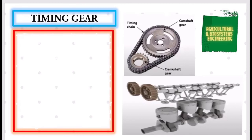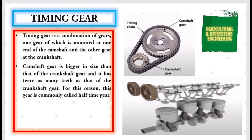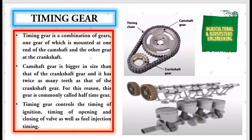Next, timing gear. Timing gear is a combination of gears, one gear of which is mounted at one end of the camshaft and the other gear at the crankshaft. Camshaft gear is bigger in size than that of the crankshaft gear and it has twice as many teeth as that of the crankshaft gear. For this reason, this gear is commonly called half-time gear. Timing gear controls the timing of ignition, timing of opening and closing of valve, as well as fuel injection timing.